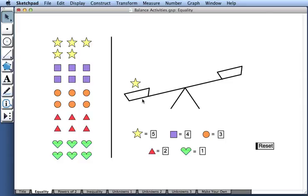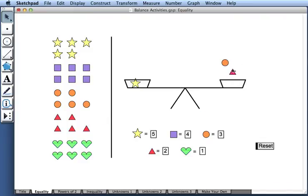How can we restore the scale so that it's balanced? Well, since the star has a value of 5, I can drag the circle with the value of 3 and a triangle with a value of 2. So 5 is equal to 3 plus 2, or star is equal to circle plus triangle.